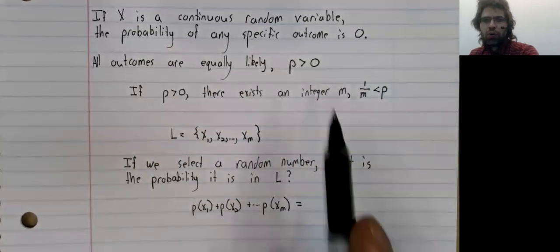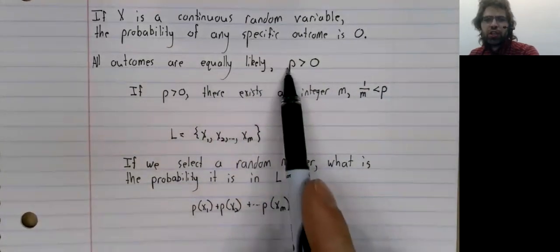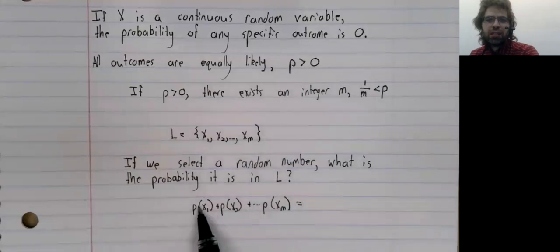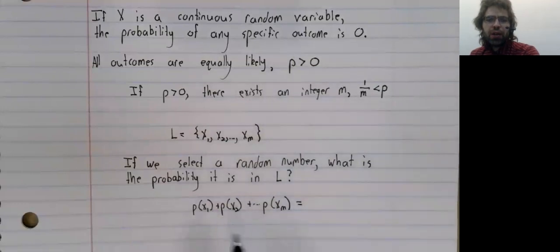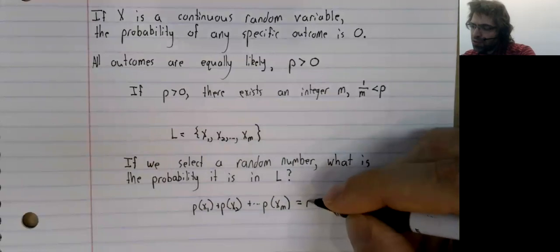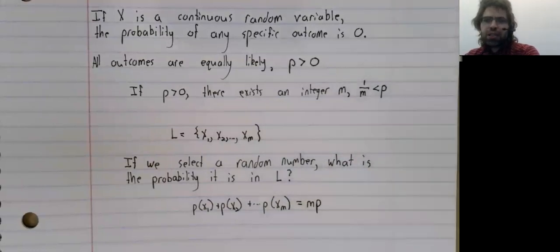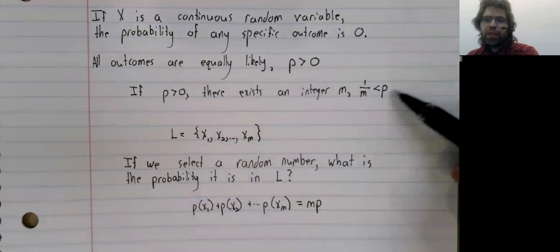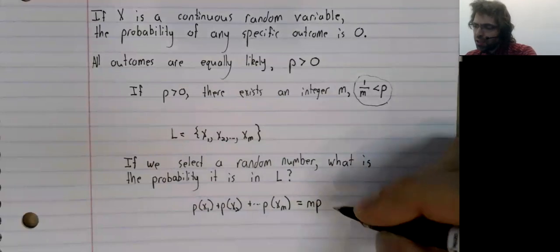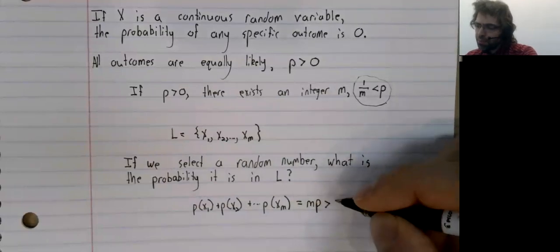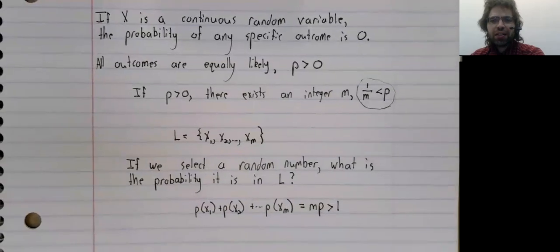Because all of our outcomes are equally likely, these are all the same - they're all p. We're adding p to itself m times, so the probability is m times p.